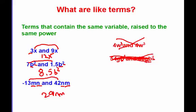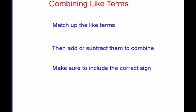So let's go ahead and talk about how we're going to combine our like terms. To combine like terms, we want to match up our like terms, then add or subtract them to combine. We want to make sure we include the correct sign. So for example, if we said like, 3x plus 2 plus 8x minus 6.